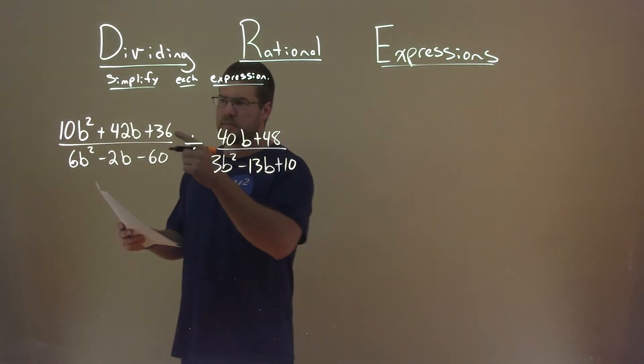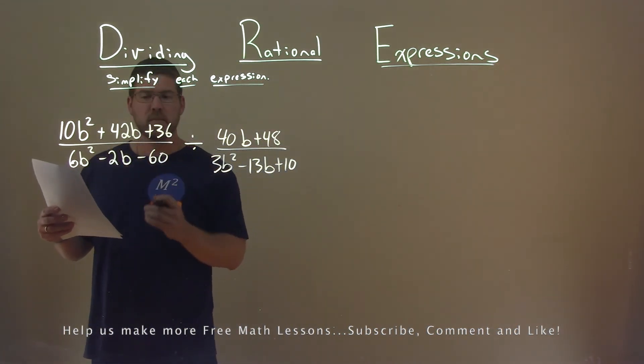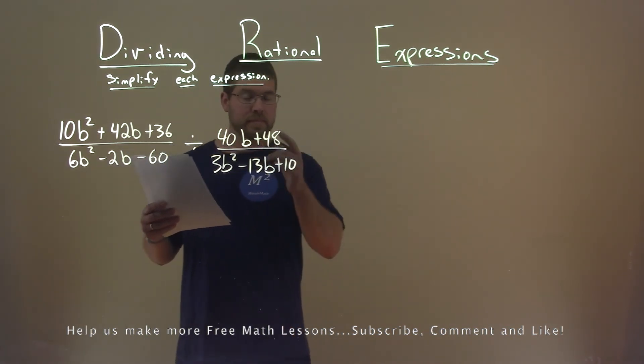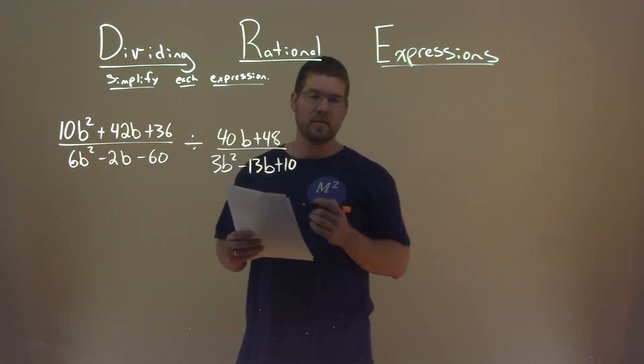We're given this expression right here: 10b squared plus 42b plus 36 divided by 6b squared minus 2b minus 60, divided by 40b plus 48 divided by 3b squared minus 13b plus 10. We need to simplify this expression.